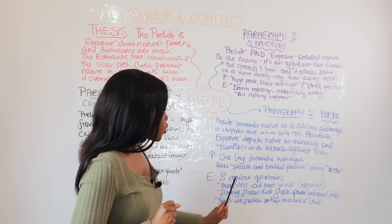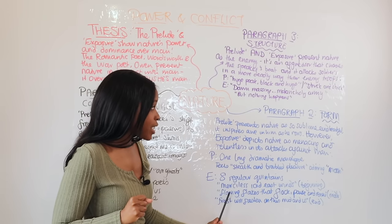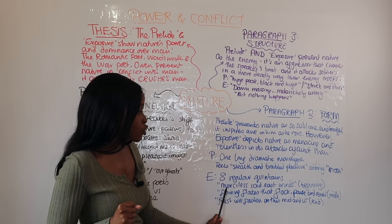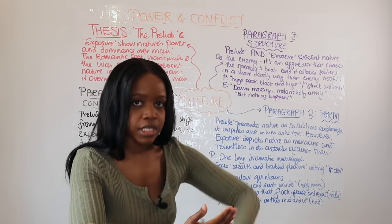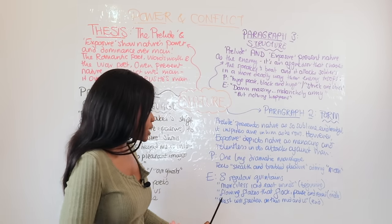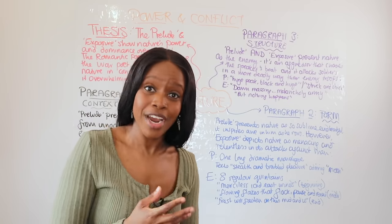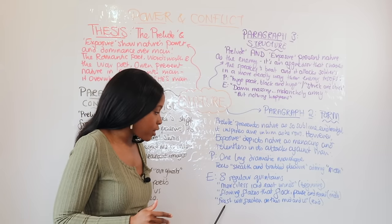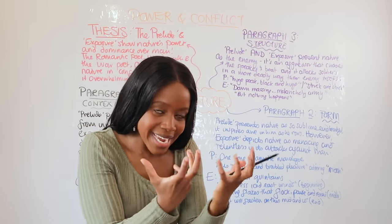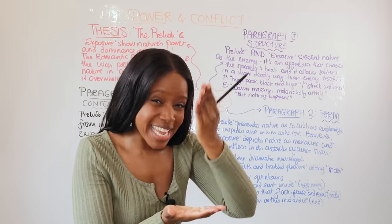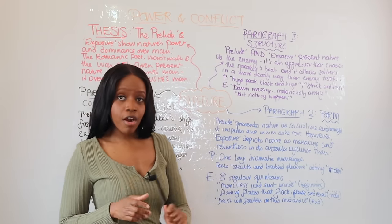'Exposure' is written in eight regular quintains — five-line stanzas. Owen describes the 'merciless iced east winds' at the start, then 'flowing flakes that flock, pause and renew' in the middle, and finally 'the frost will fasten on this mud around us' by the end. This consistent stanza form mirrors how nature's attack never stops, relentlessly attacking the soldiers from beginning to end, even as they are dying and their 'eyes are ice.'